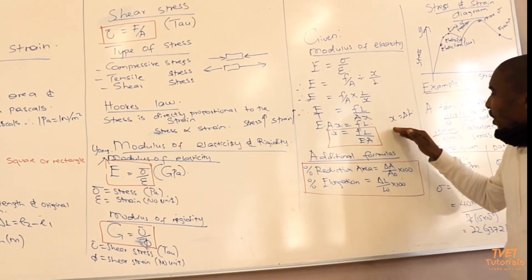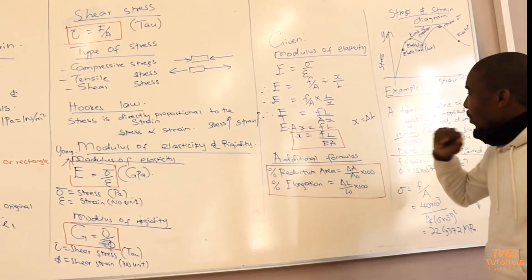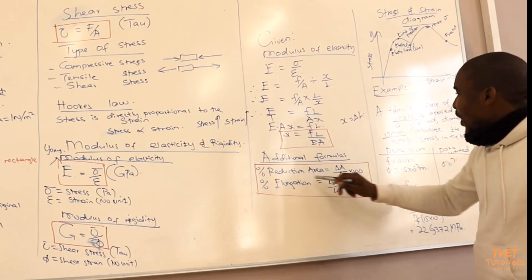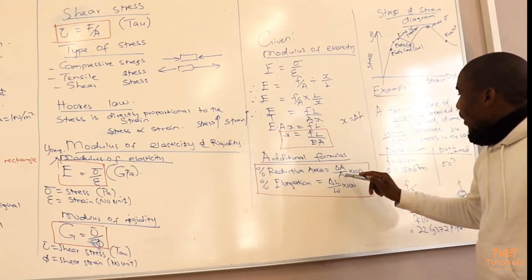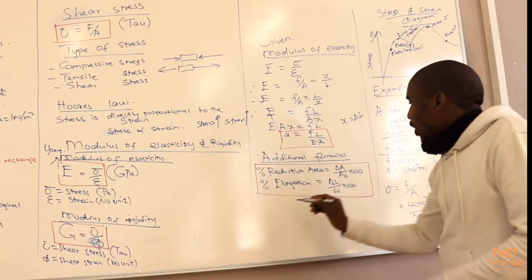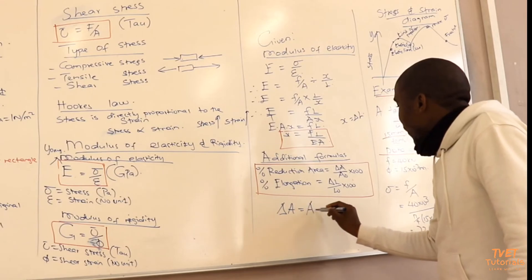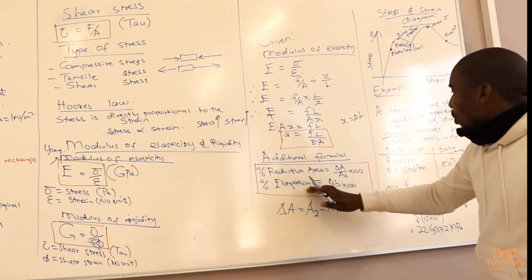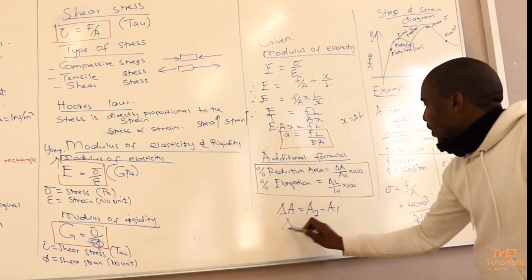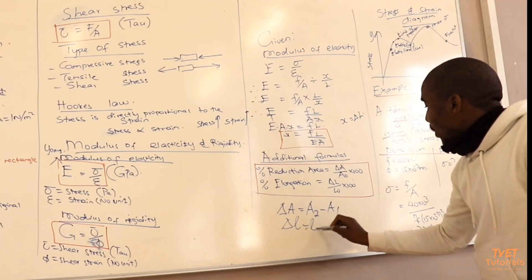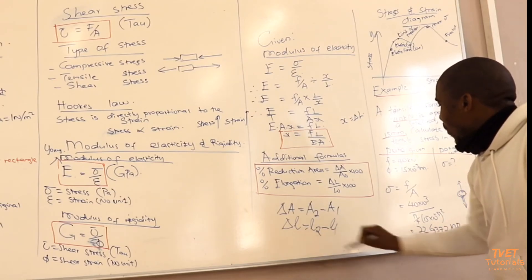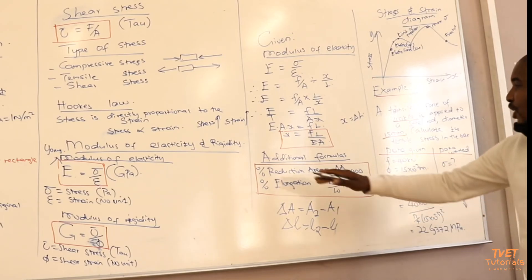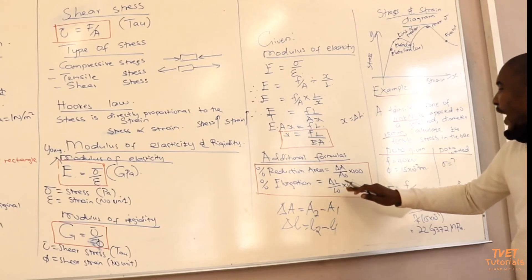Additional formulas to take note of: reduction in area is the change in area over the original area, where change in area is the final area minus the initial area. Percentage elongation is the change in length — final length minus initial length — over the original length. These additional formulas may be required if they ask you to find the reduction in area or percentage elongation.